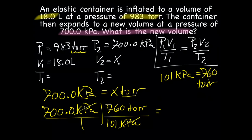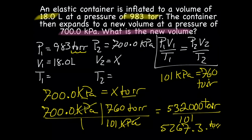kPa cross out. Now multiply across the top and that gives us 532,000 Torr over 101. When we divide, I got 5267.3 something something something Torr. Let's look at our sig figs. We have four sig figs, so we'll have 5267. So now instead of using 700 kPa, we'll use 5267 Torr.